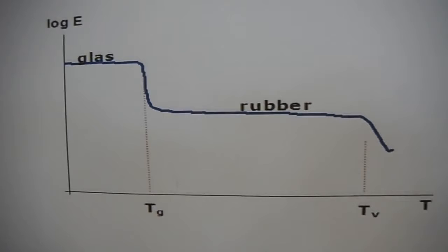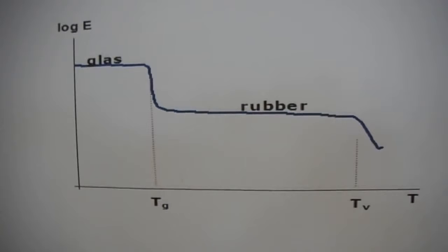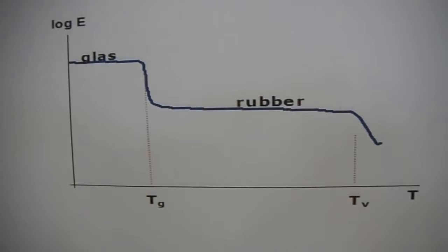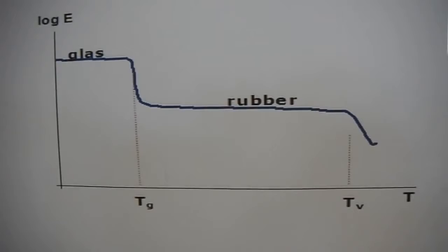To go from the glass to the rubber state, the glass transition temperature, the Tg, has to be passed. This is the temperature where the polymer goes from the glass to the rubber state. It depends on the chain stiffness and the attraction between bonds. The Tg of polystyrene is about 100 degrees Celsius.